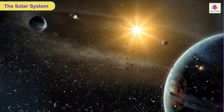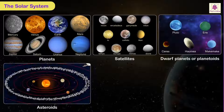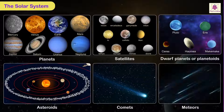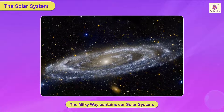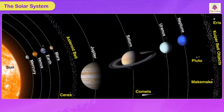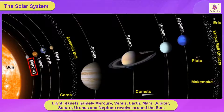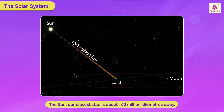The solar system comprises planets, satellites, dwarf planets, asteroids, comets and meteors. The Milky Way galaxy contains our solar system. The Sun, with all the heavenly bodies that revolve around it, forms the solar system. Eight planets — Mercury, Venus, Earth, Mars, Jupiter, Saturn, Uranus, and Neptune — revolve around the Sun. Our closest star, the Sun, is about 150 million kilometers away.